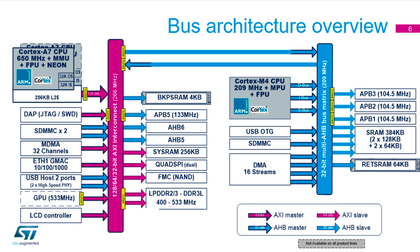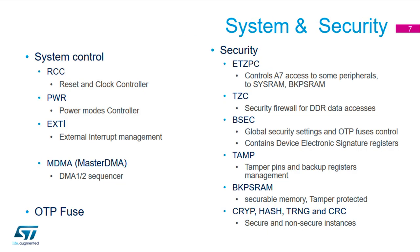For system and security, you have all standard clock control — internal RCs and external crystal or module options. There are multiple power modes for the device, and you can still use external interrupt pins feeding into either the A7 or the M4, so this part is largely the same as the M4-only devices but also available to the A7.